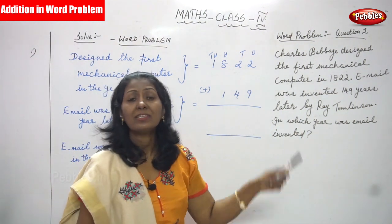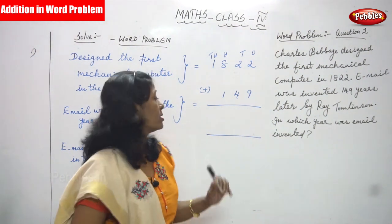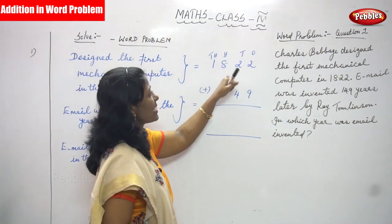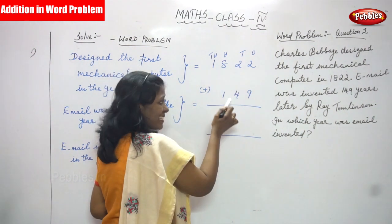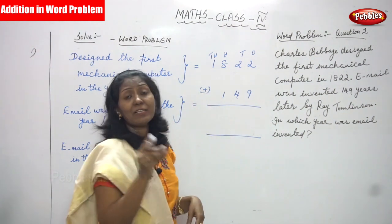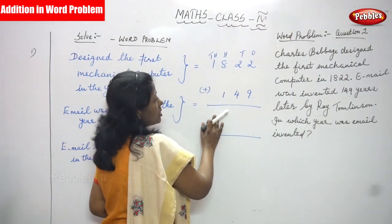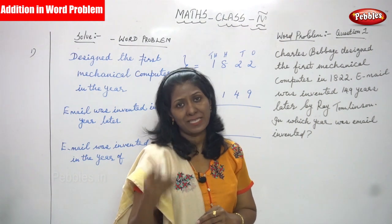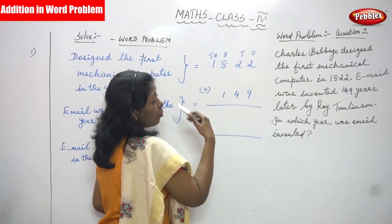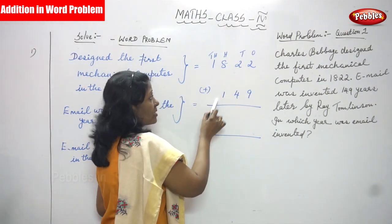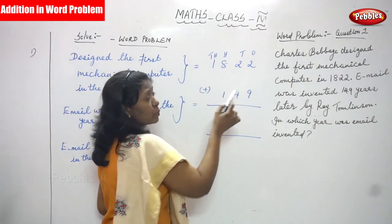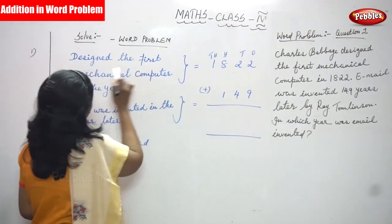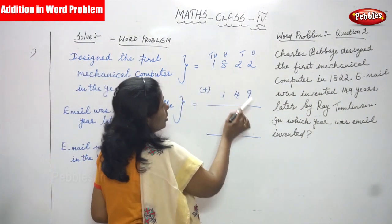Email was invented in the year 1822 plus 149 years later. The word 'later' means it is an addition. So we have to add 149 to 1822 — the year the first mechanical computer was designed. That is why this is an addition problem. First mechanical computer designed in 1822, and 149 years later email was invented, so we add.